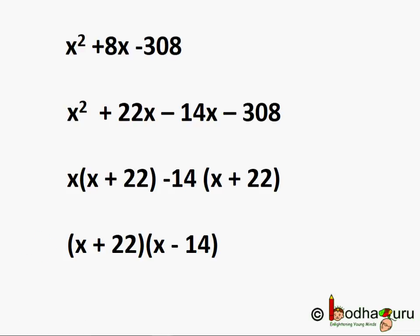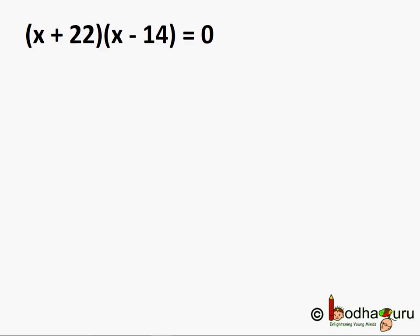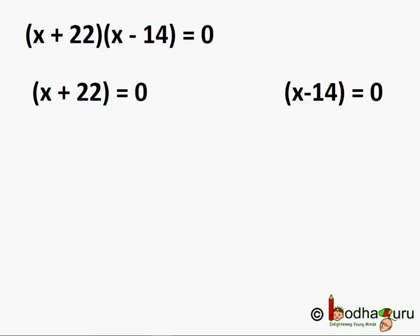The equation is now (x + 22)(x − 14) = 0. The product of two entities is 0 if at least one of them is 0. So either x + 22 = 0 or x − 14 = 0, giving us x = −22 or x = 14. These two values are the roots of the equation.